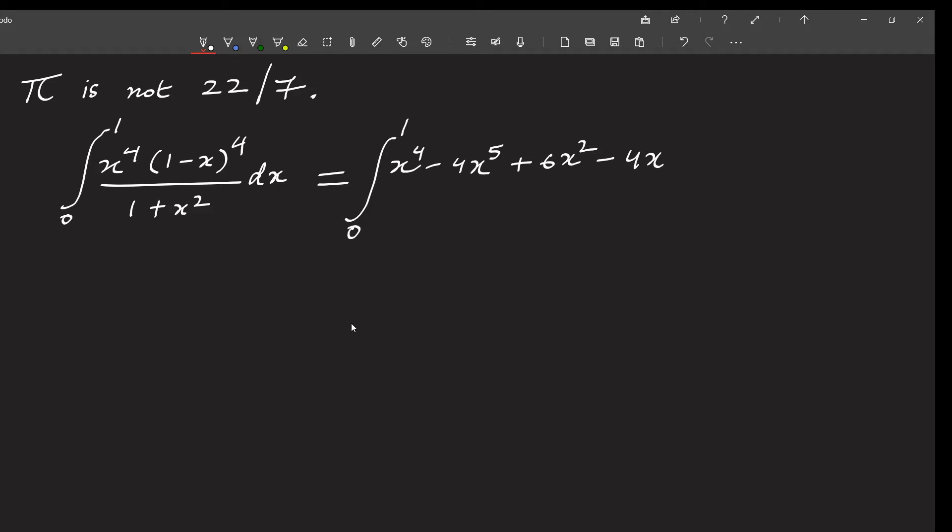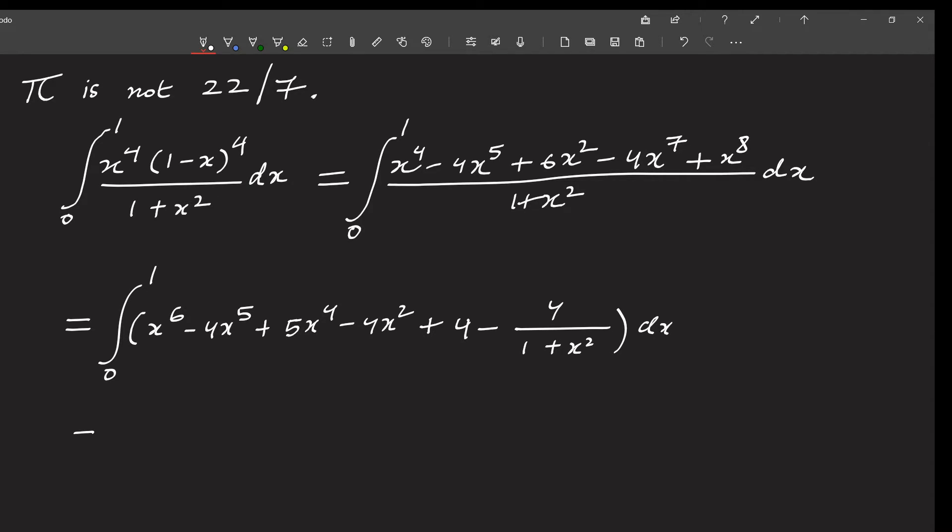If we expand the numerator, we get x to the power 4 minus 4 times x to the power 5 plus 6 times x squared minus 4 times x to the power 7 plus x to the power 8. And in the denominator, we have 1 plus x squared. So this is a quantity that we are trying to integrate. But before we do the integration, we can simplify the numerator and denominator one step further. We can write it as x to the power 6 minus 4x to the power 5 plus 5 times x to the power 4 minus 4 times x squared plus 4 minus 4 divided by 1 plus x squared.